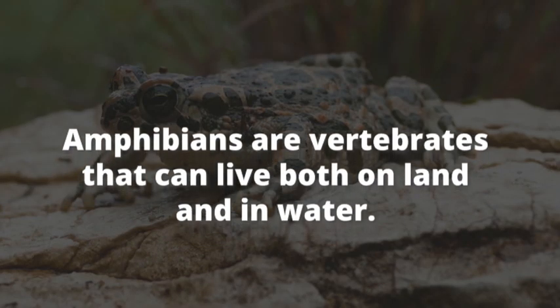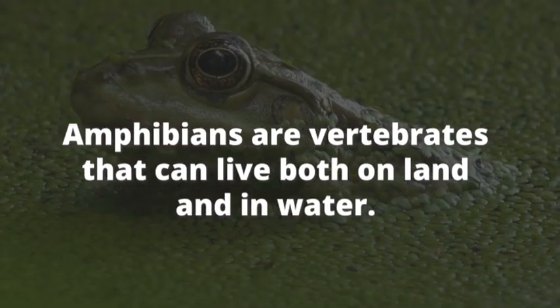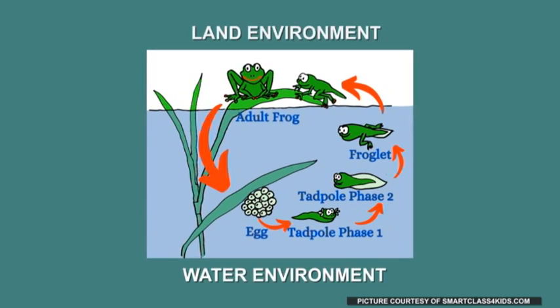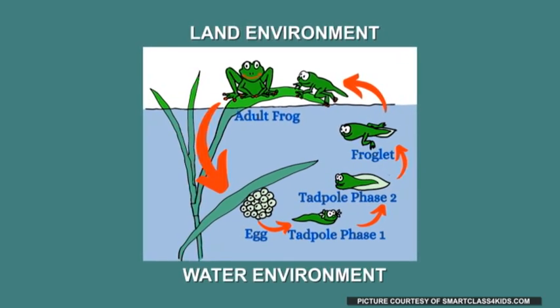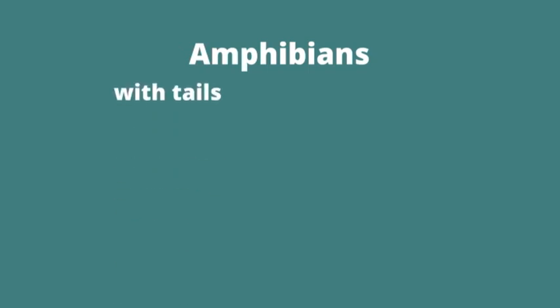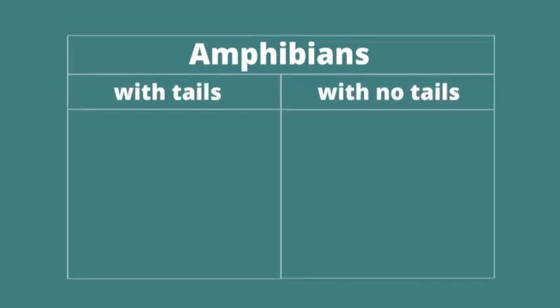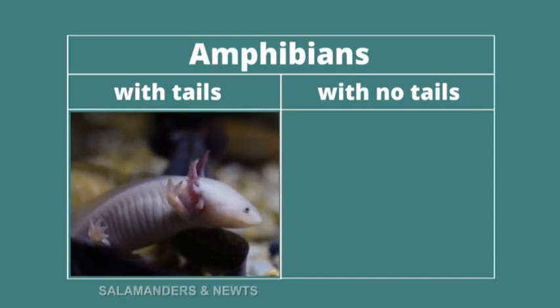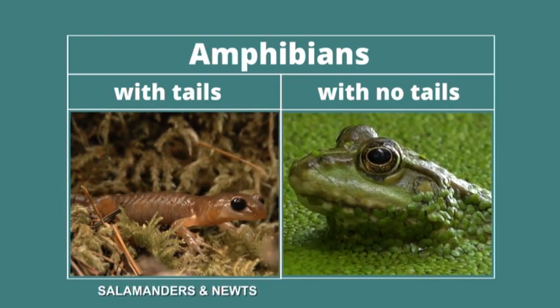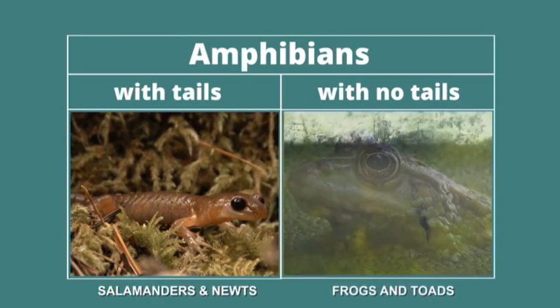Amphibians are vertebrates that can live both on land and in water. Most amphibians undergo a series of body changes as they develop, which enable them to go from a water environment to a land environment. Amphibians are grouped into those with tails and those with no tails. Amphibians with tails include salamanders and newts, while amphibians without tails include frogs and toads.